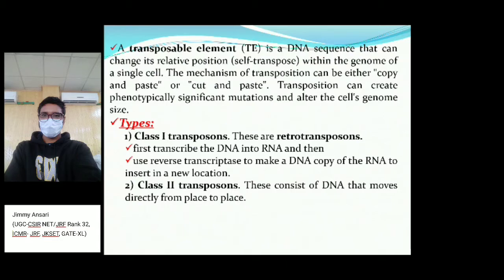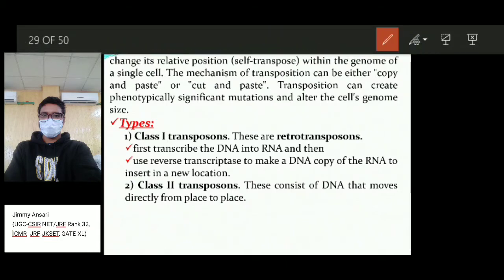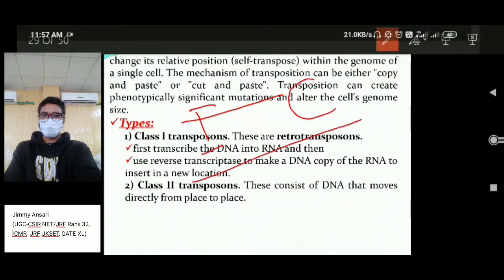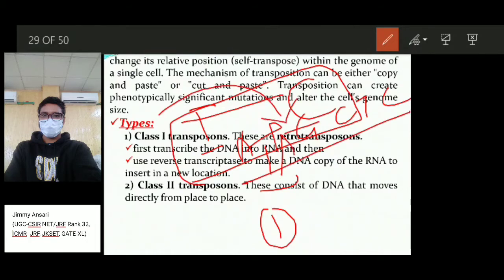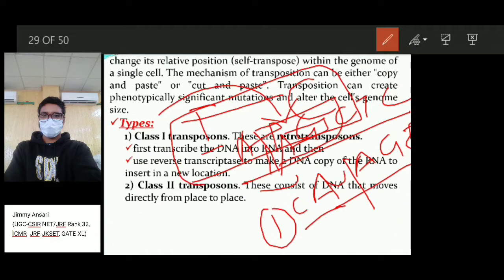Transposition can create phenotypically significant mutations and alter the genome size. For example, if there is an open reading frame with an initiating sequence (ATG) and a stop codon (UAG), a transposable element can insert into this sequence between the start and stop codons. The inserted element changes the sequence — for example introducing a UAG stop codon in a new position — resulting in a different protein that reflects a different phenotypic trait.